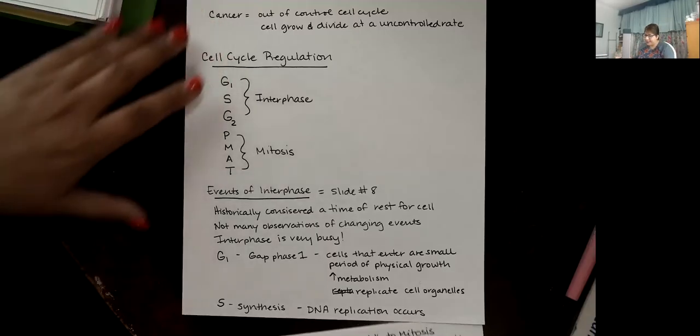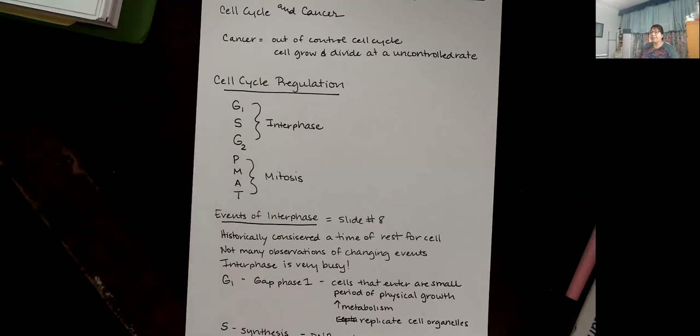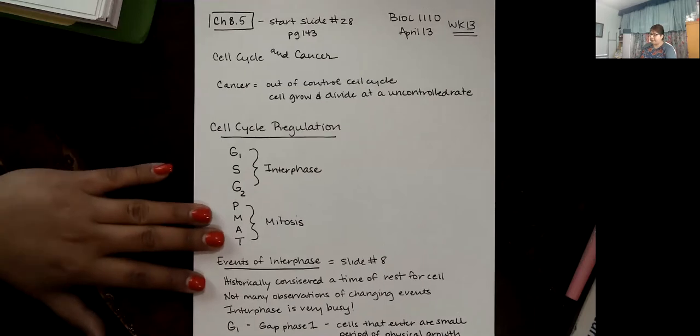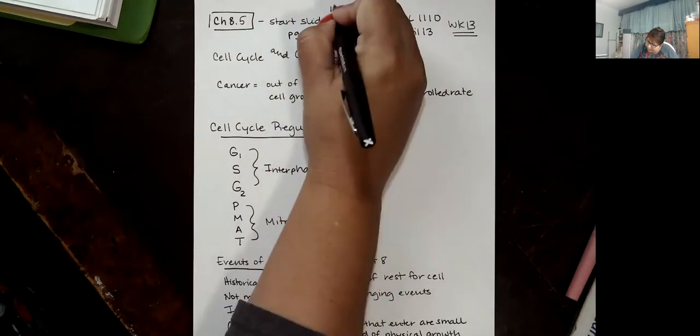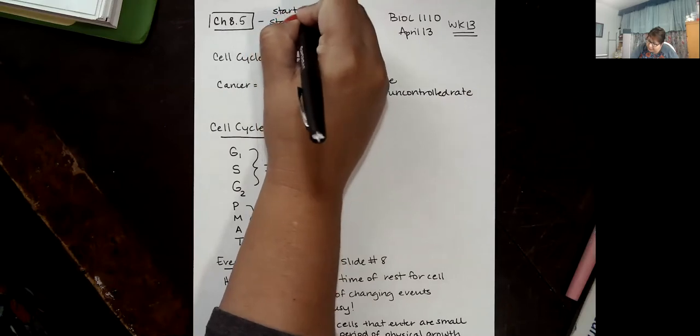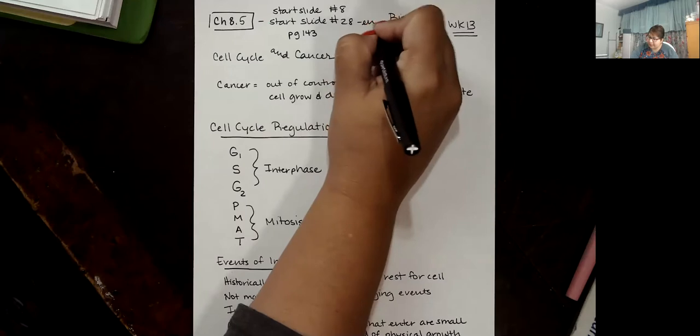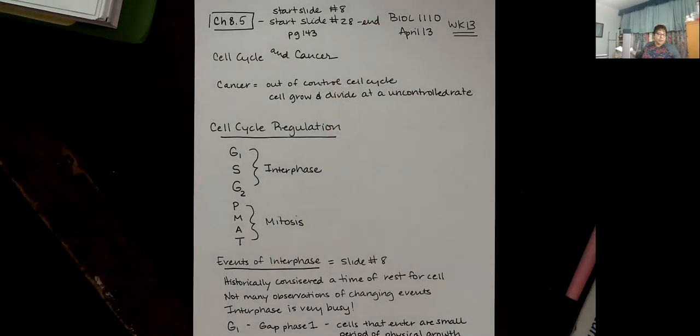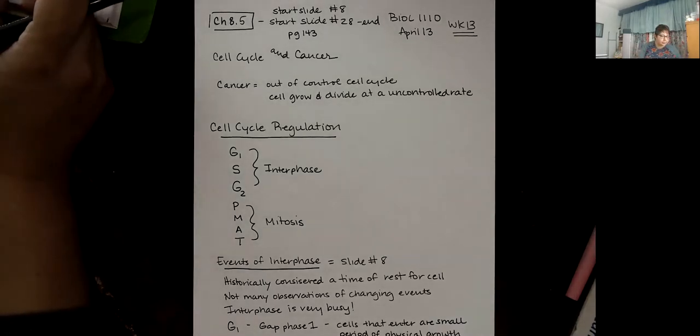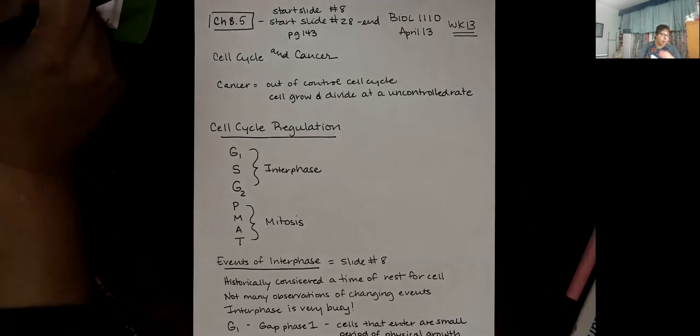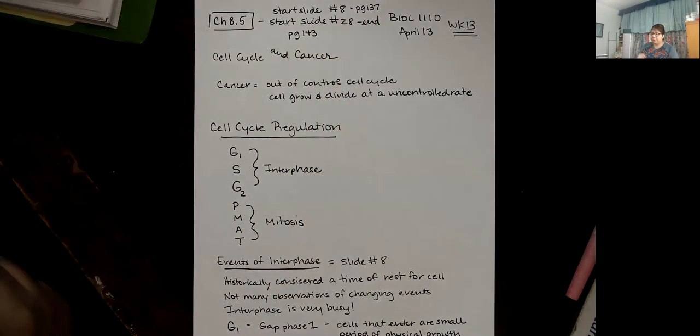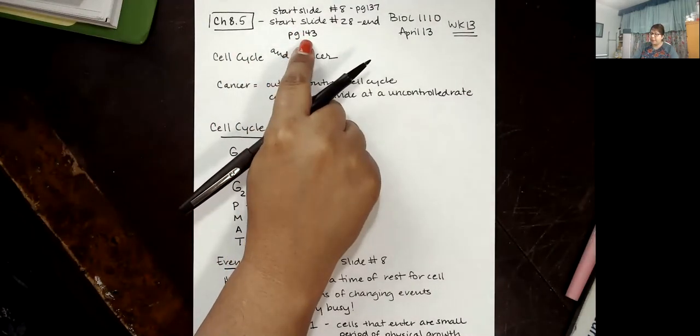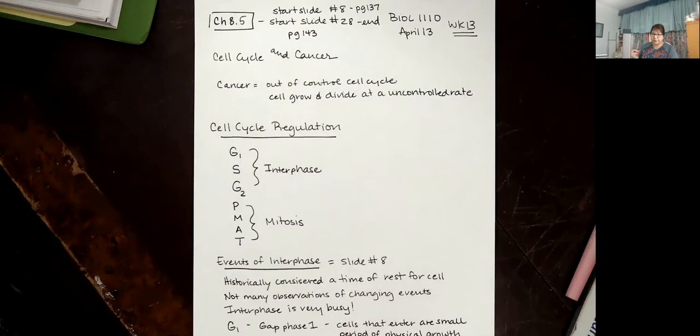Thanks for the reminder to record. All right, so we are talking about chapter five, mostly section eight is what we're going to be focusing on today. A little bit of interphase, but then also in section five. So on the slideshow for today, we're going to be looking at slide number eight, and then slide number 28 to the end. And so that corresponds, if you're following in your textbook, roughly to page 137 and then when we skip over to slide number 28, we're going to skip over to page 143.